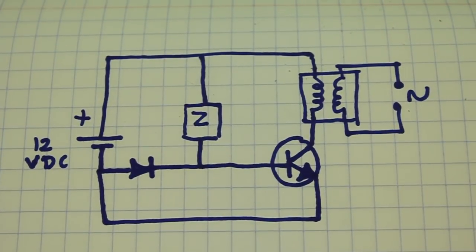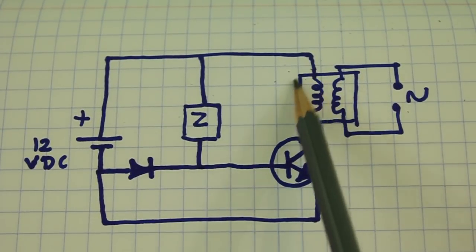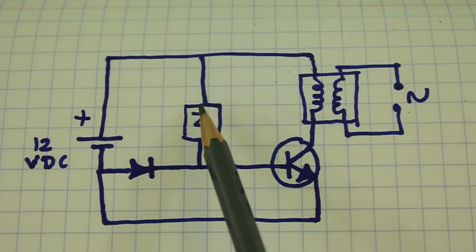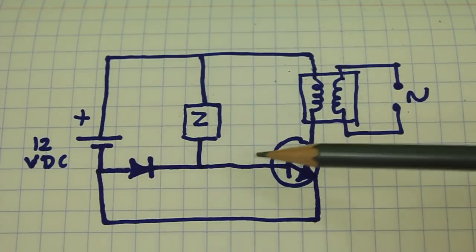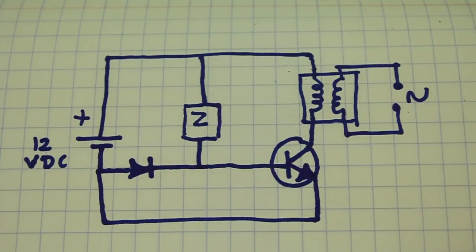This is the circuit of the inverter, this is our transformer, this is the low voltage side and here we have the buzzer. The base of the transistor is fed through the buzzer which is oscillating at around 2 kilohertz.